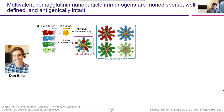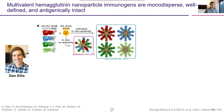However, using ferritin they were unable to generate particles displaying trimeric hemagglutinin ectodomains. So they came to us to collaborate using two-component nanoparticle technology to make mosaics co-displaying oligomeric antigens. This was work led in my group by graduate student Dan Ellis. We made multiple trimeric proteins — genetic fusions between trimeric hemagglutinin ectodomains from current commercial flu vaccines, H1, H3, B Yamagata, and B Victoria — to a trimeric nanoparticle protein called I53-50N5B.